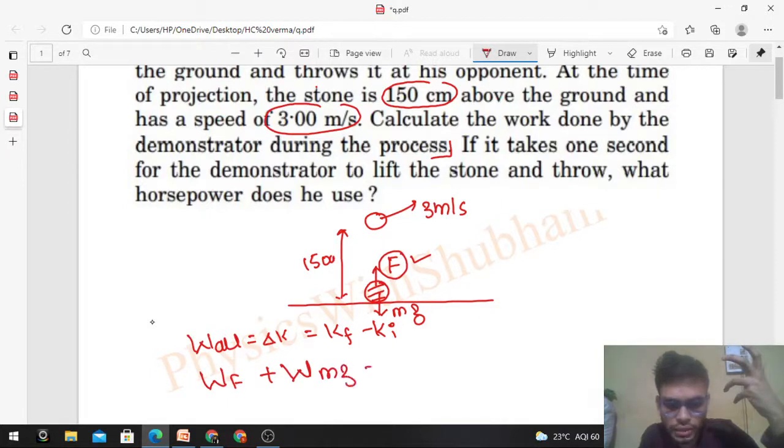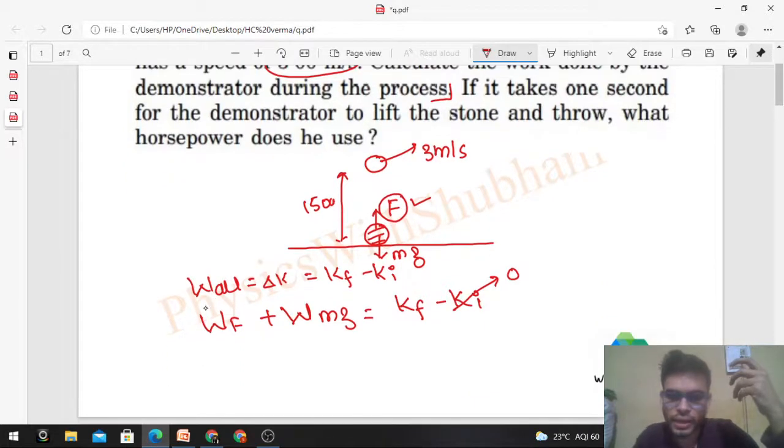The initial kinetic energy of the stone is zero because initially the stone is lying on the ground at rest. What is the final kinetic energy? Final kinetic energy is half of m times v squared.